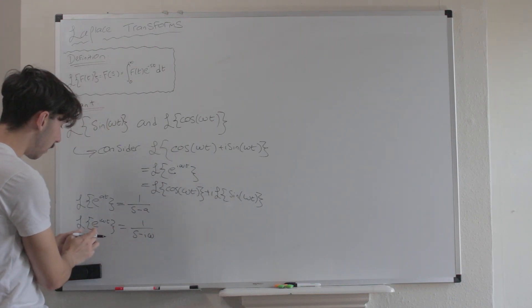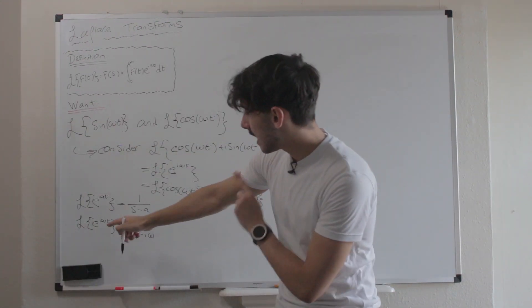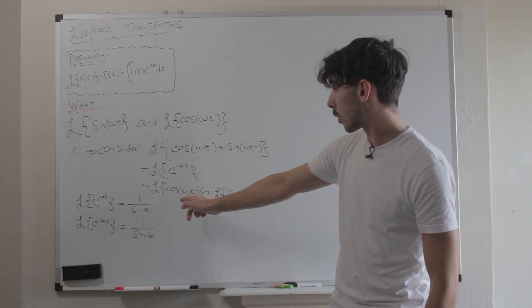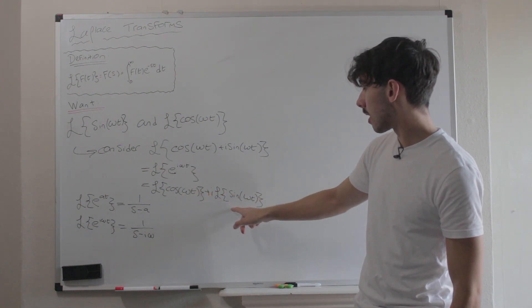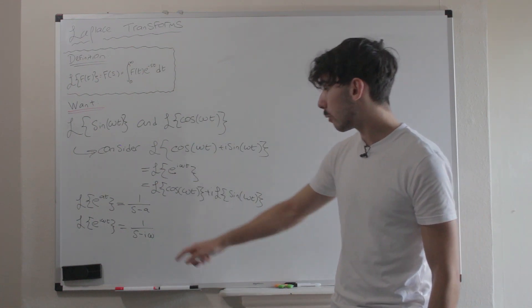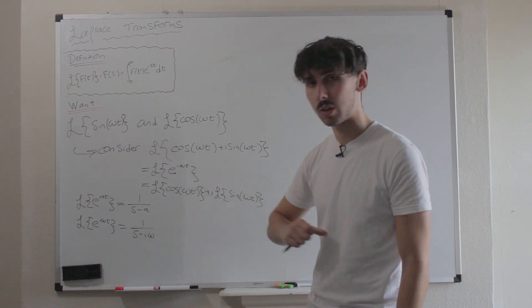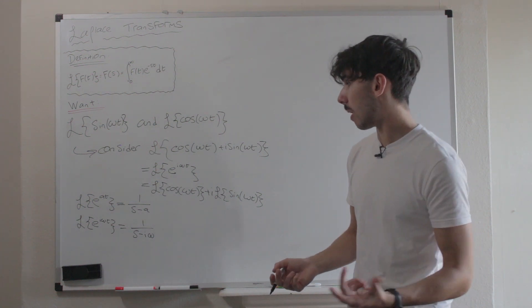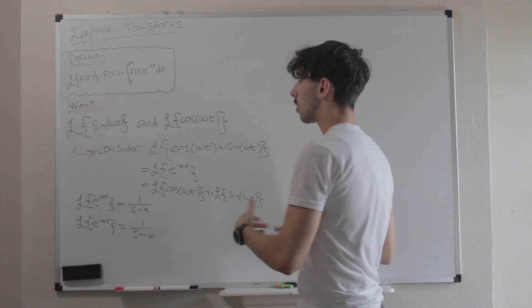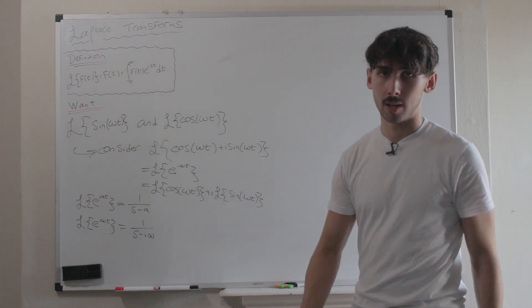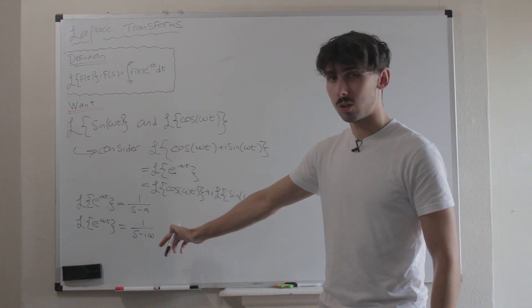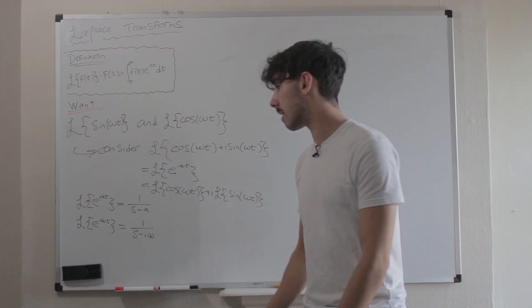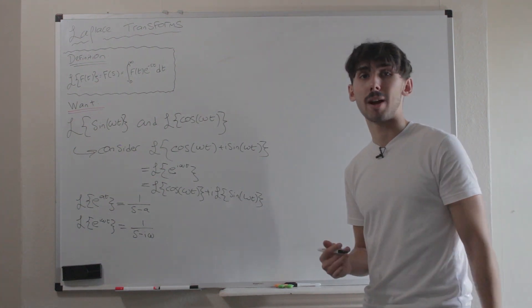The Laplace transform of e^(iωt) is the same as the Laplace transform of cos(ωt) plus i times the Laplace transform of sin(ωt). So if we can split the fraction 1/(s − iω) into a real and imaginary component, the real component will be the Laplace transform of cos(ωt) whilst the imaginary will be that of sin(ωt). I want to rationalize the denominator and write this in the form a + bi.